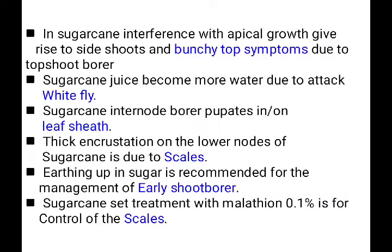First, in sugarcane, interference with apical growth gives rise to side shoots and bungy top symptoms — this is due to the top shoot borer. In sugarcane there are 3 main pests: early shoot borer, internodal borer, and top shoot borer. Top shoot borer causes bungy top symptoms.